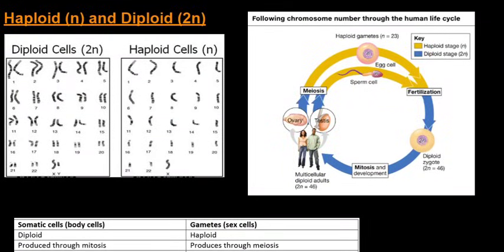Let's get started with regards to haploid and diploid. Haploid is also written as n and diploid can also be written as 2n. This is everything to do with the chromosome amount.